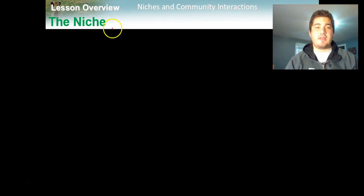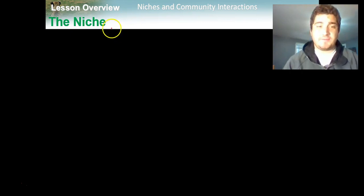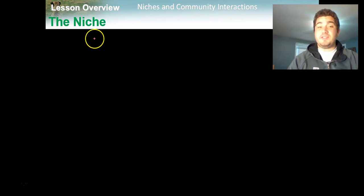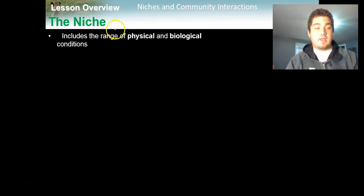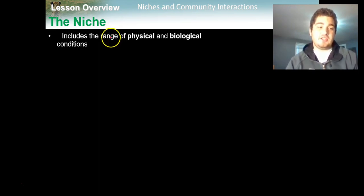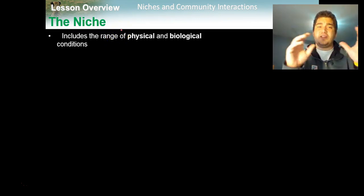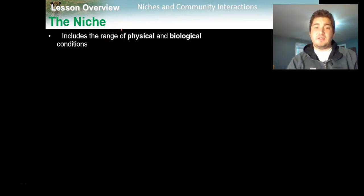We're going to start out talking about the niche. Now I know this is a weird word — it's actually a French word with several pronunciations. The European pronunciation is 'niche,' or it can also be said as 'niche.' In America I think we say 'niche,' so call it what you may. A niche is the range of physical and biological conditions in which a species lives and obtains what it needs to survive.